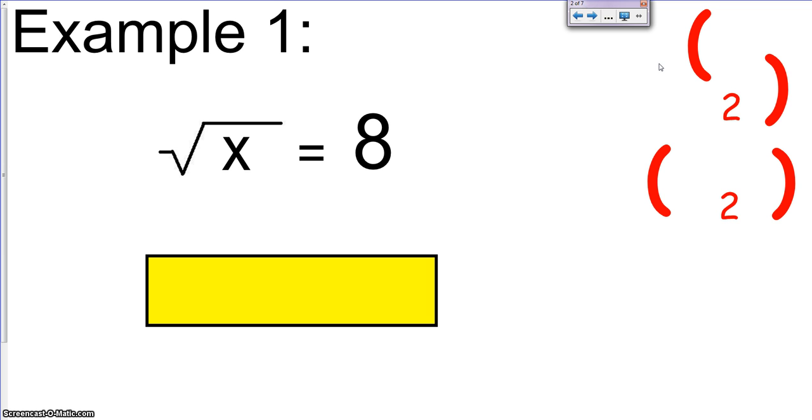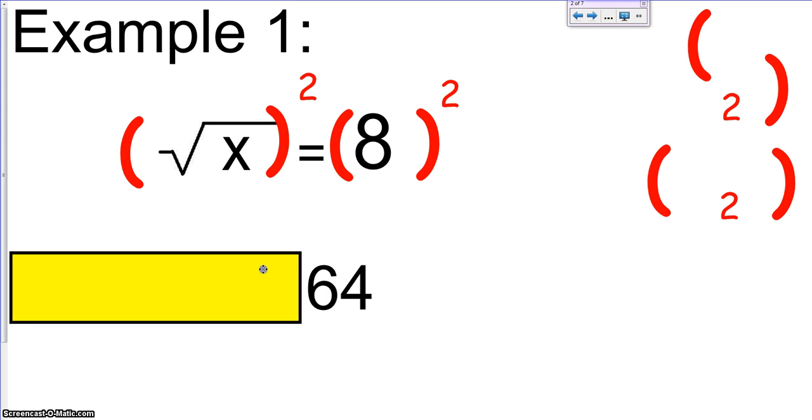Our first two examples are going to be very basic. We're just going to go over how to get rid of the square root symbol. What we want to do is we need to do the same thing to both sides, which is going to be squaring both sides. Now the right side is going to be a little bit easier to solve because most of us know that 8 squared is 64.